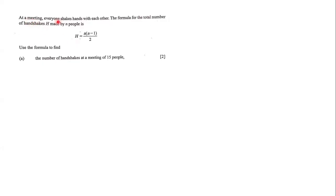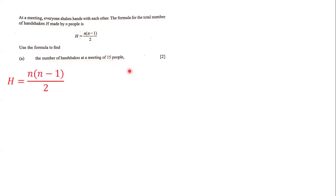At a meeting, everyone shakes hands with each other. The formula for the total number of handshakes h made by n people is h = n(n-1)/2. Use the formula to find the number of handshakes at a meeting of 15 people. Here we have this formula where h is equal to n multiplied by n minus 1, all over 2.